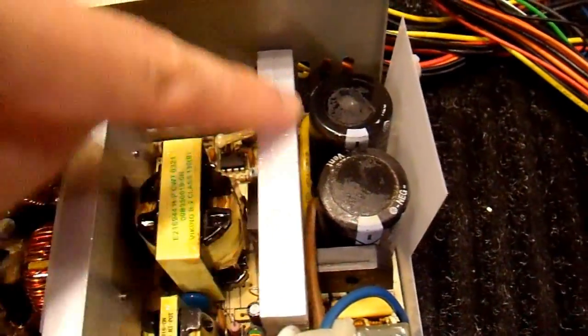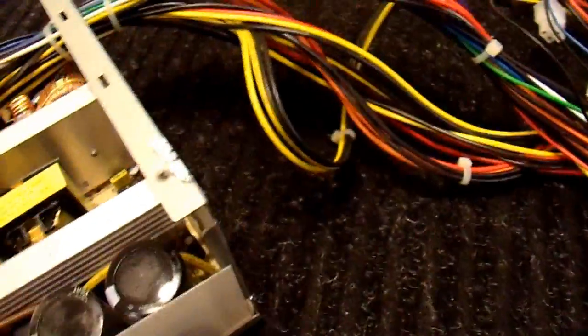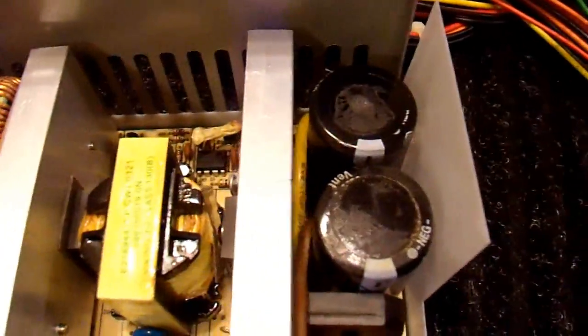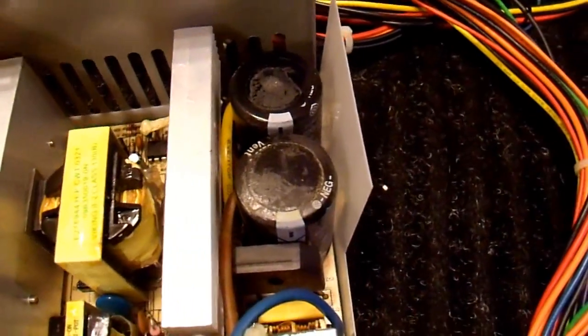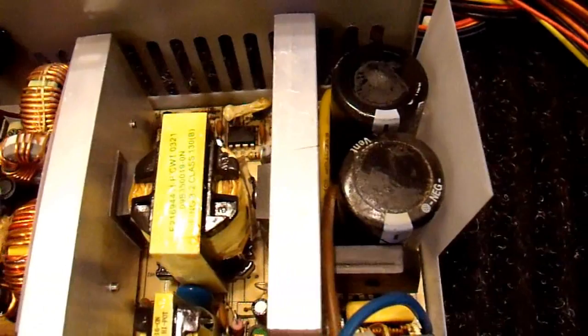So this particular heat sink here has a bunch of different transistors on it. One on this side, a few on this side, but transistors and diodes. They are the high voltage AC portion of the switching inside this.